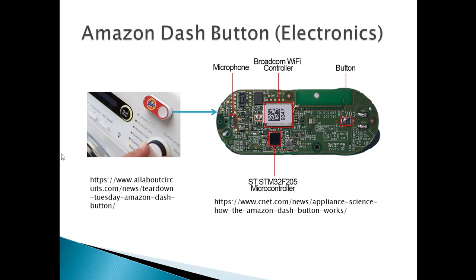A microphone on this board picks up audio signals used to set up the device, with the help of an Amazon mobile application. This setup includes initializing the Wi-Fi connection that the Dash device will use to connect to the Internet. There's no screen to set up the Wi-Fi connection on the device, hence an Amazon mobile app plus the microphone on the Dash button can accomplish this. The button, when pressed, initiates ordering the product from Amazon. There is a Wi-Fi controller that enables connection to the home Wi-Fi network to communicate orders to Amazon. The microcontroller is the computing element coordinating all of the steps and actions needed for the device to work. There is also a battery that is used to power the device. All of this is packed into a board that is about 2 inches long and 1 inch wide.